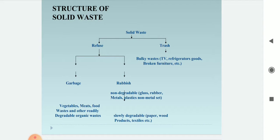The structure of solid waste: solid waste is divided into reuse and trash. Under reuse, garbage and rubbish are there. Under trash, bulky waste such as TVs, refrigerators, and broken furniture. Under rubbish, non-degradable items like glass, rubber, metal, and plastics. Under garbage, vegetables, meats, food waste, and other readily degradable organic waste. Slowly degradable items like paper, wood products, and textile also come under rubbish.